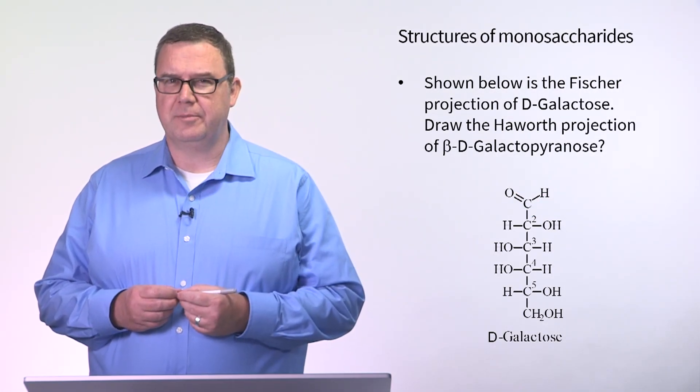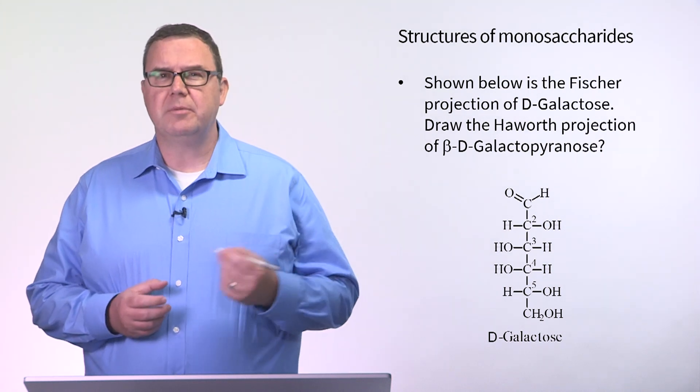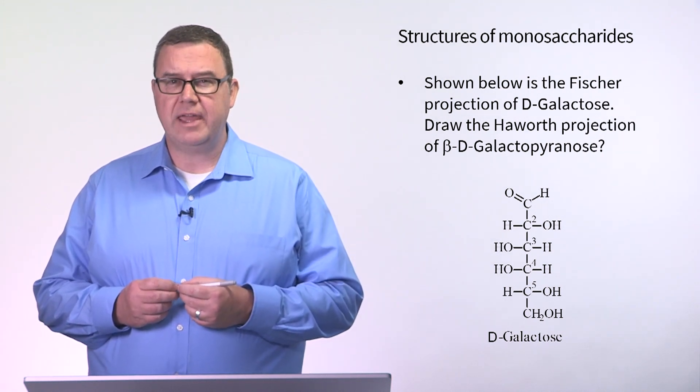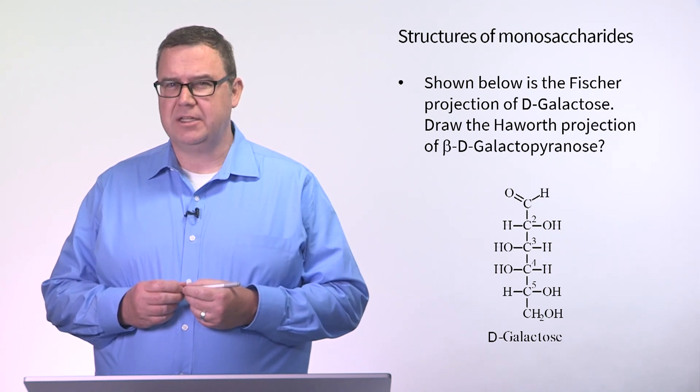Let's examine the structures of some monosaccharides. Shown below is the Fischer projection of D-galactose. Draw the Haworth projection of beta-D-galactopyranose.